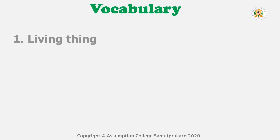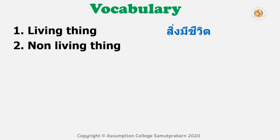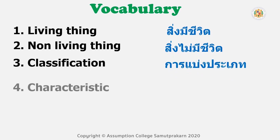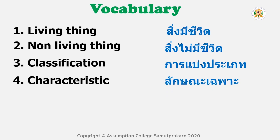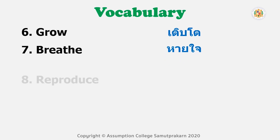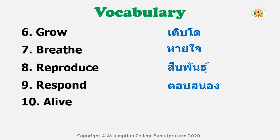Let's start. Number 1: living thing. Number 2: non-living thing. Number 3: classification. Number 4: characteristic. Number 5: move. Number 6: grow. Number 7: breathe. Number 8: reproduce. Number 9: respond. Number 10: alive. That's all ten words that you have to know.